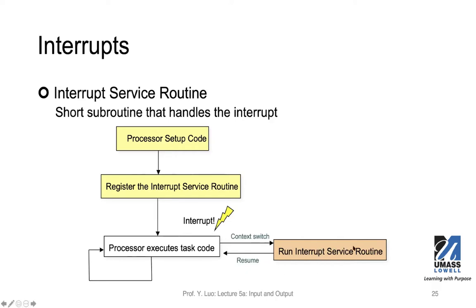The main purpose of the ISR is to respond to the interrupt. The actual operation will differ from case to case, but the main purpose is to deal with that interrupt. Once the ISR is completed, it will return to the main program and resume the main application. The processor will continue from whatever instruction it left off before the context switch.